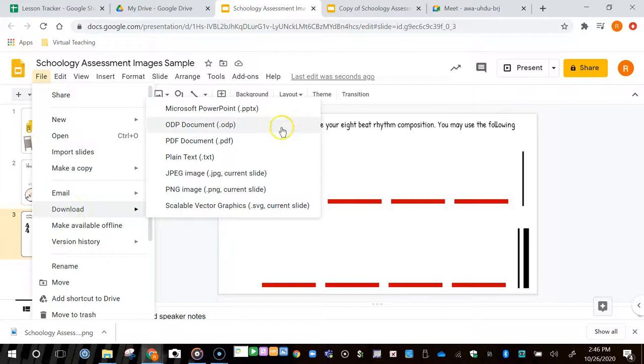I only want this one slide to make my one image, so I'm going to create a PNG image of my current slide. When I click on that, it will download to my computer.